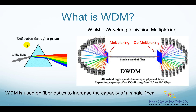As we all have learned from elementary school science, a white light beam can be separated into individual colored light beams by a prism, as shown in this picture. Vice versa, individual colored light beams can also be combined into a single white light beam by the prism, if we use the prism in the reverse direction.